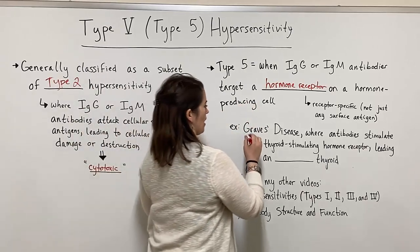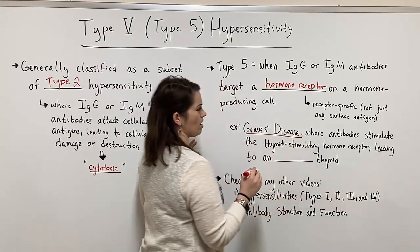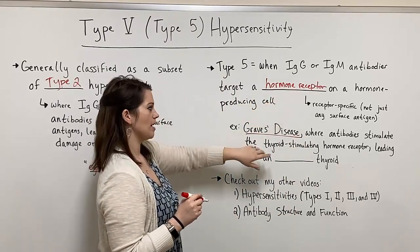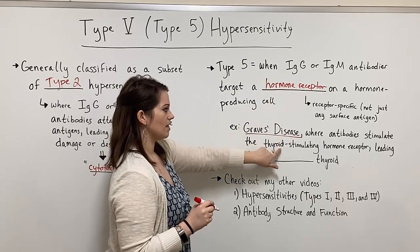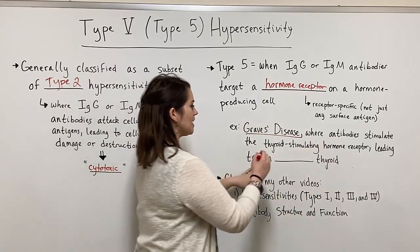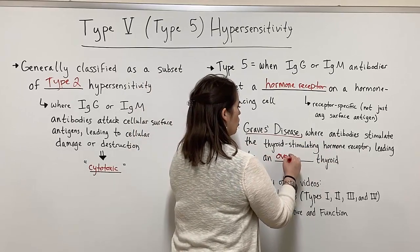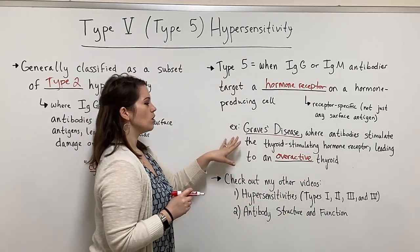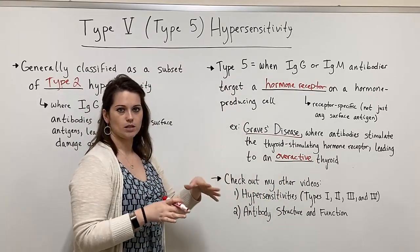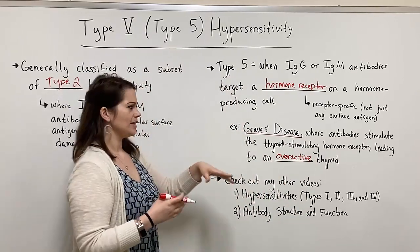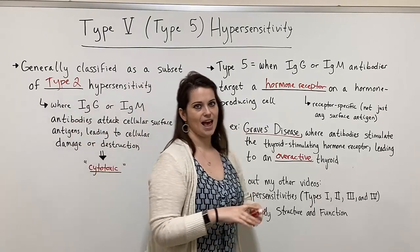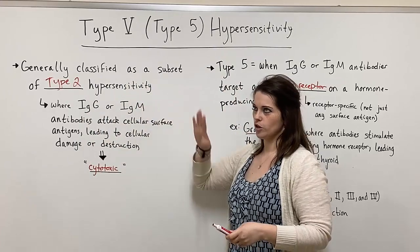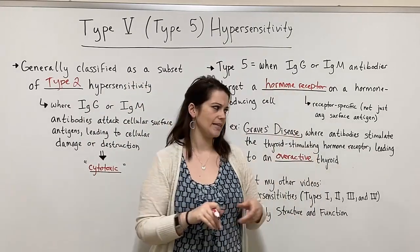An example of this is Graves' disease. This is where antibodies will stimulate the actual receptor — that's their target. They will stimulate the thyroid-stimulating hormone receptor, leading to an overactive thyroid. Now, if you go to most textbooks or Wikipedia, you'll actually see Graves' disease given as an example of a type 2 hypersensitivity. So I want you to be aware of that if you see it in both places.